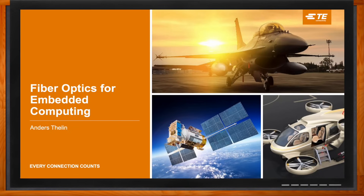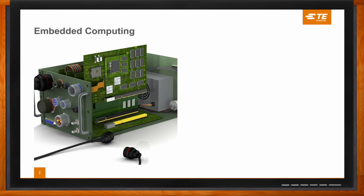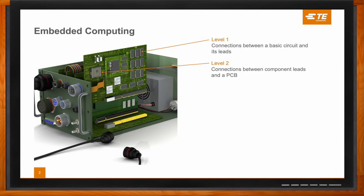Okay, so we're talking about fiber optics for embedded computing today. When it comes to connectors for embedded computing designs, we're looking at a variety of different placements within that design, right? That's right. We have what we call six different levels. Starting at the top with level one, it's the connection between basic circuitry and its leads. Level two is the connections between that component and the actual PCB board.